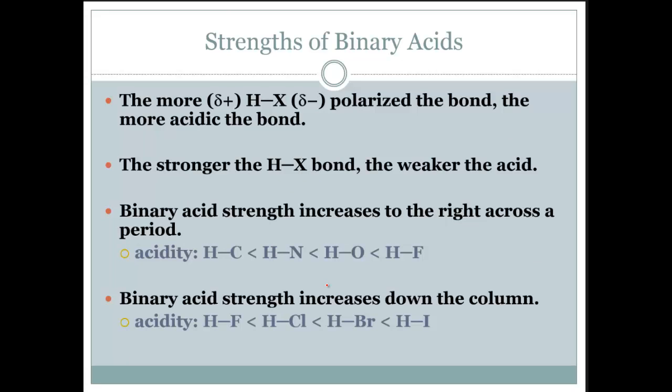So let's look at binary acids. Bi means two, so we're talking about acids with only two elements, two atoms in it. The more polarized the bond, so H will be partially positive and that other element will be partially negative, the more acidic the bond. So the more polar this is, which means the more electronegative that X is, the more acidic it is.